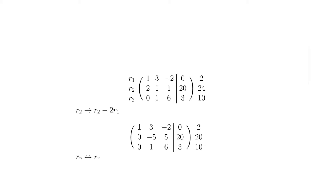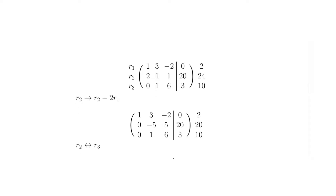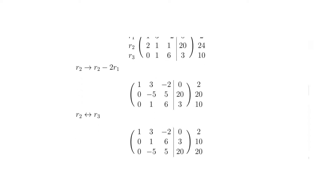Now we want to sort out column two. We want a 1 there and zeros elsewhere. We can get a 1 straight away just by swapping the positions of rows 2 and 3, because zeros on the left won't affect the left-hand column. So row 2 becomes row 3 and vice versa, and I've swapped the corresponding row sum totals as well.